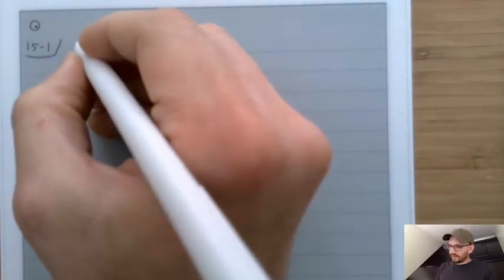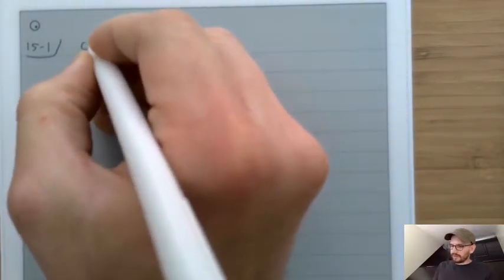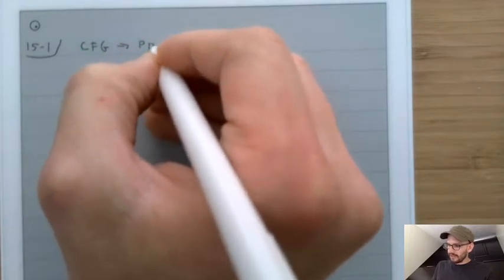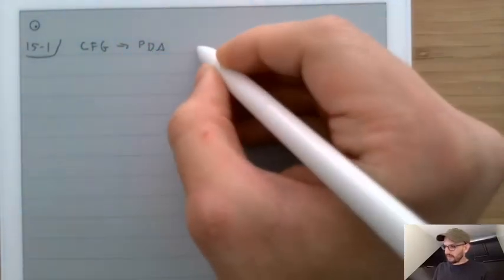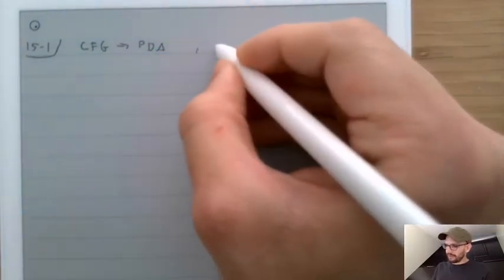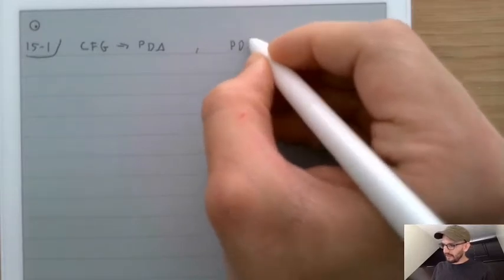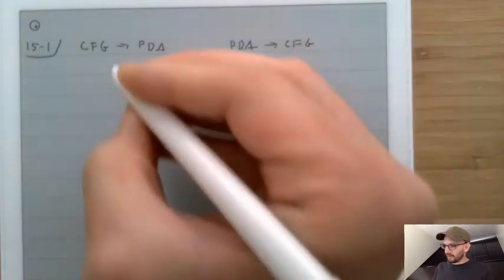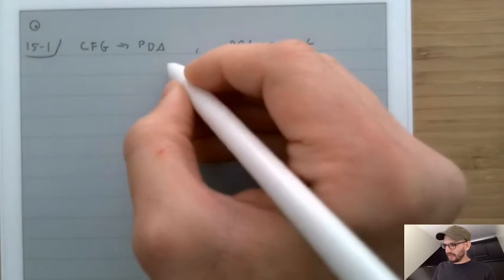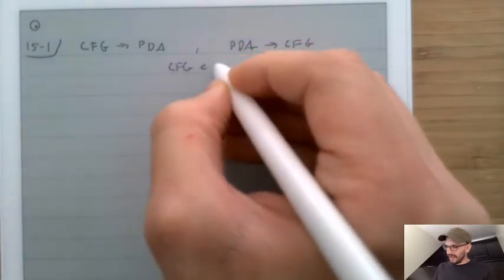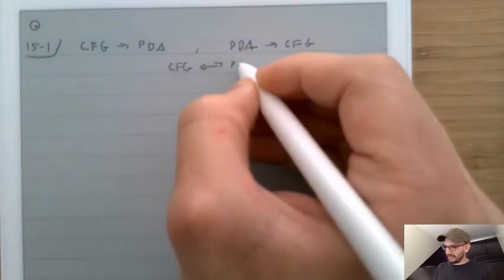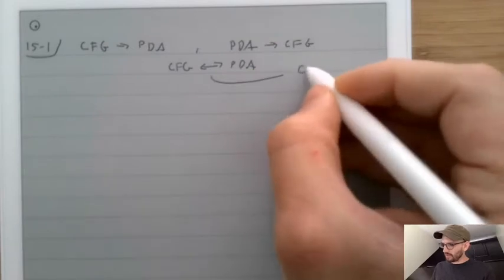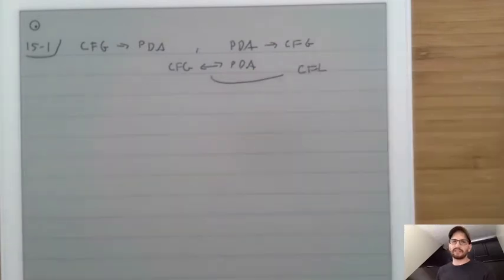Last time, we made a transformer that took a context-free grammar and turned it into a PDA. This time, we'll do the opposite, and we'll take a PDA and turn it into a context-free grammar. Thus, we will establish that context-free grammars and PDAs are equivalent in power, and they both describe the context-free languages.